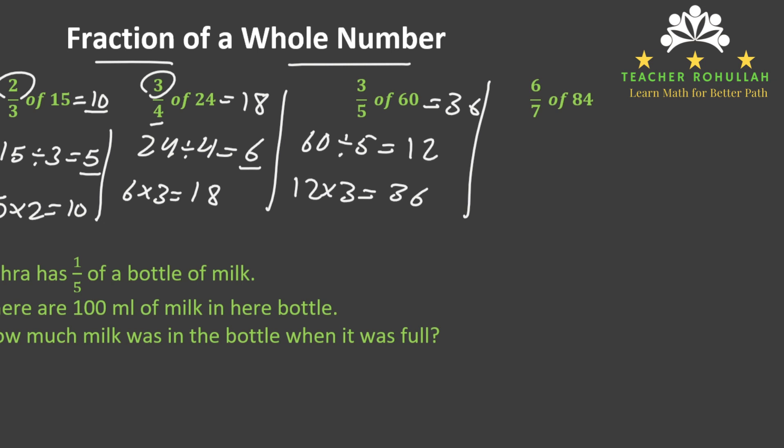So the fourth example here is 6 sevenths of 84. We divide 84 by 7, then multiply the result with 6. So 84 divided by 7 will be equal to 12 because 7 times 2 is 14. Now 12 times 6 will be equal to 72.